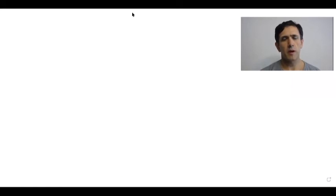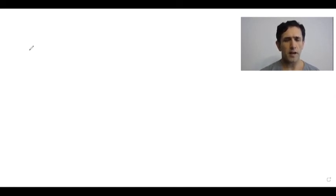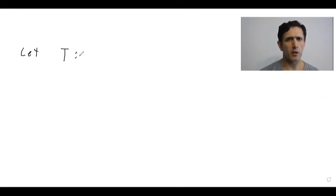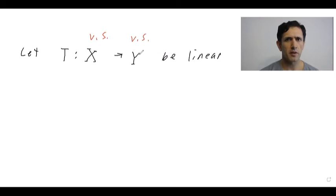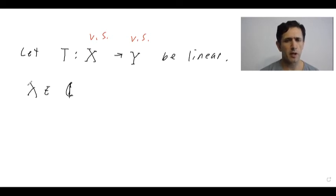So what I want to do now is briefly talk about eigenvalues. In the next video we will prove the spectral theorem for compact self-adjoint operators. I particularly want to highlight the differences between existence of eigenvalues when we're dealing with infinite dimensional spaces versus finite dimensional spaces.